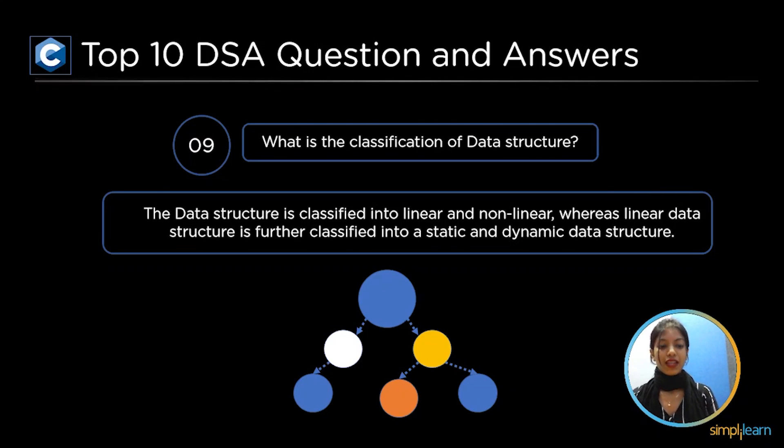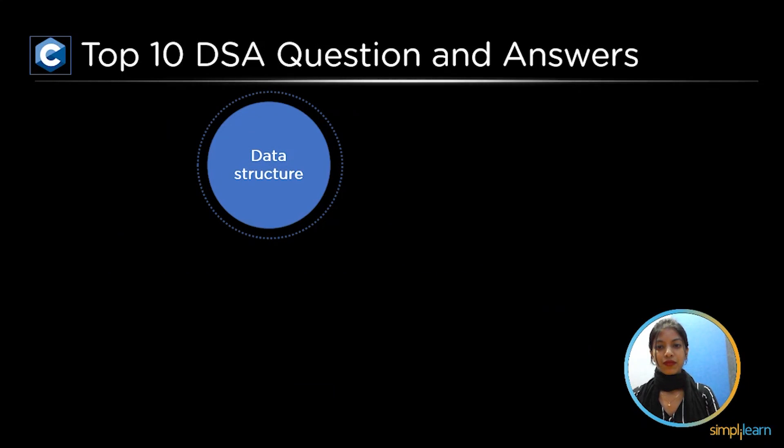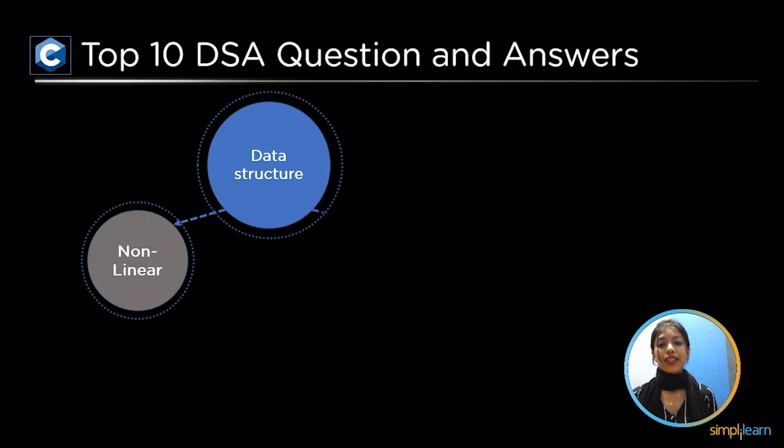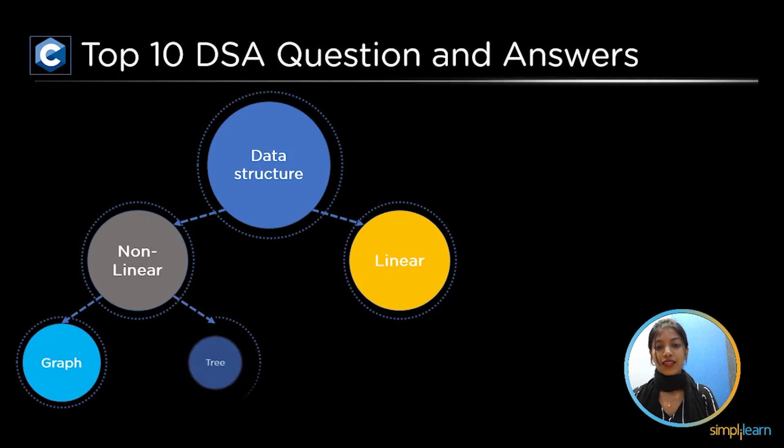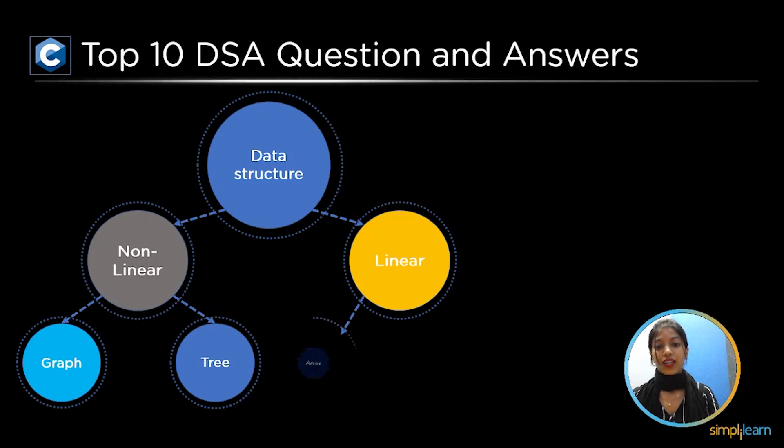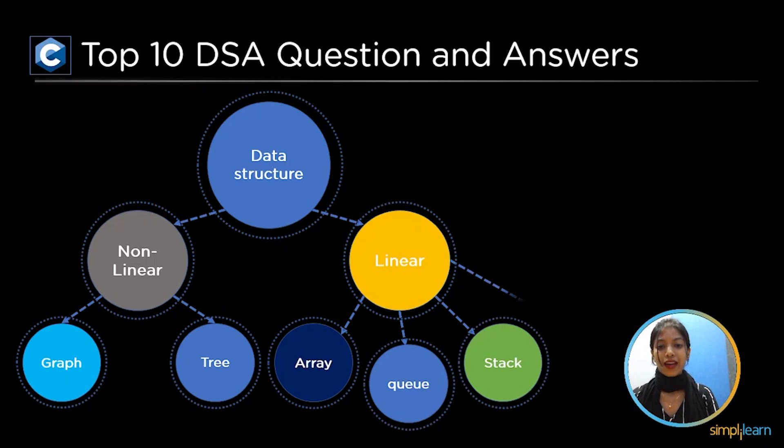So now let's look at a complete classification of a data structure. The data structures are classified into linear and nonlinear in which nonlinear data structure consists of tree and graph. A linear data structure is divided into arrays, queues, stack and linked list.